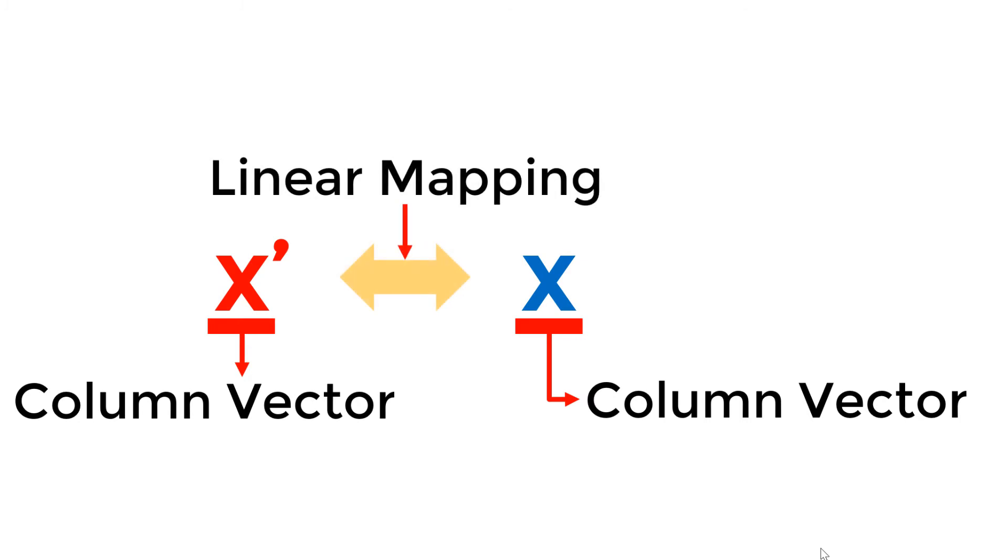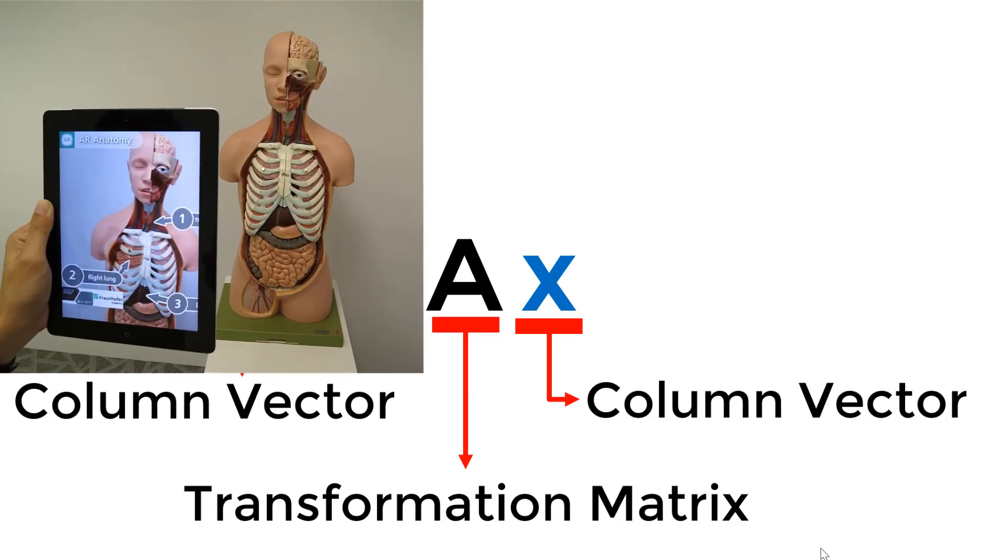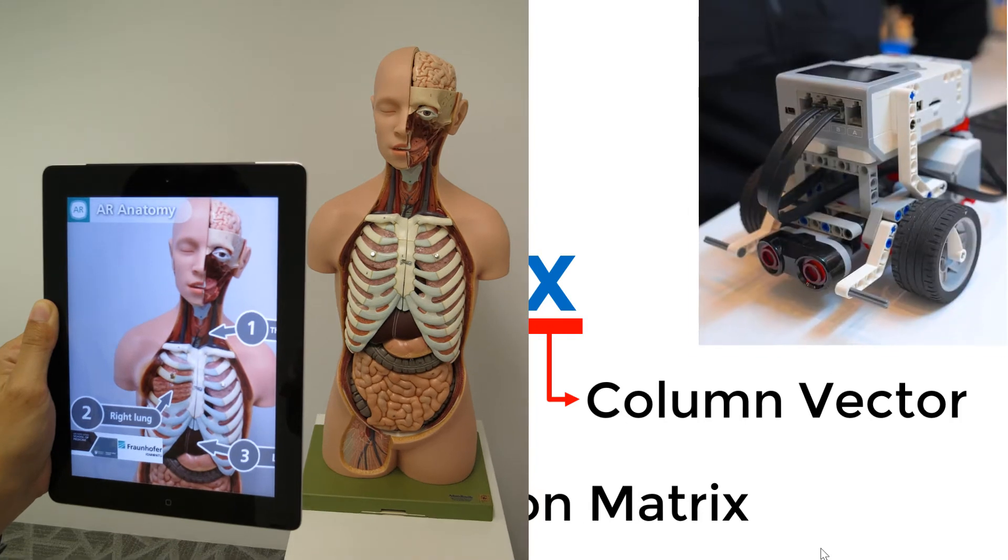If you have a column vector x, you can transform your column vector x to another column vector x prime through the linear operator A. The linear operator A can be a transformation matrix. The linear transformation is a very useful mathematical tool in many applications including image analysis and control theory.